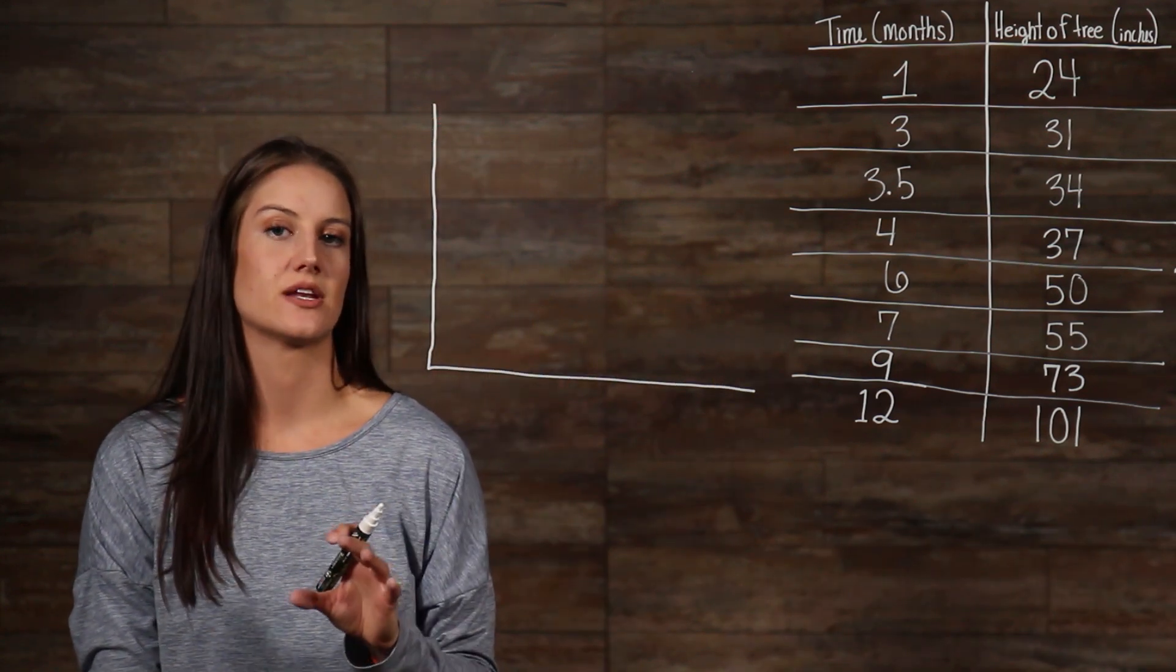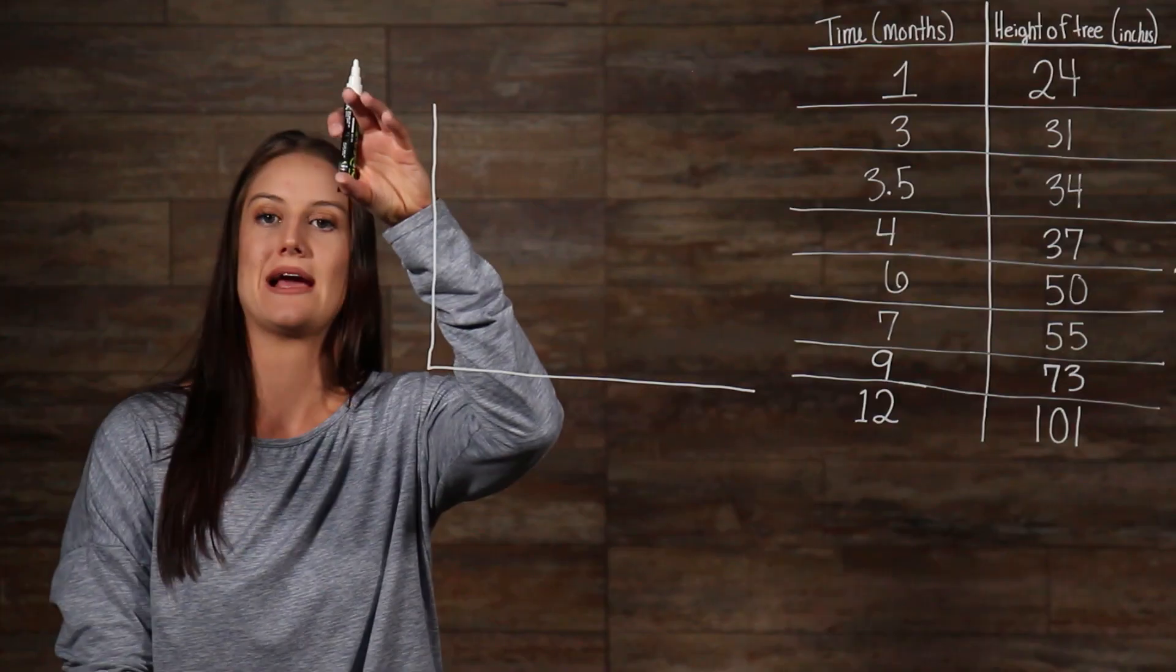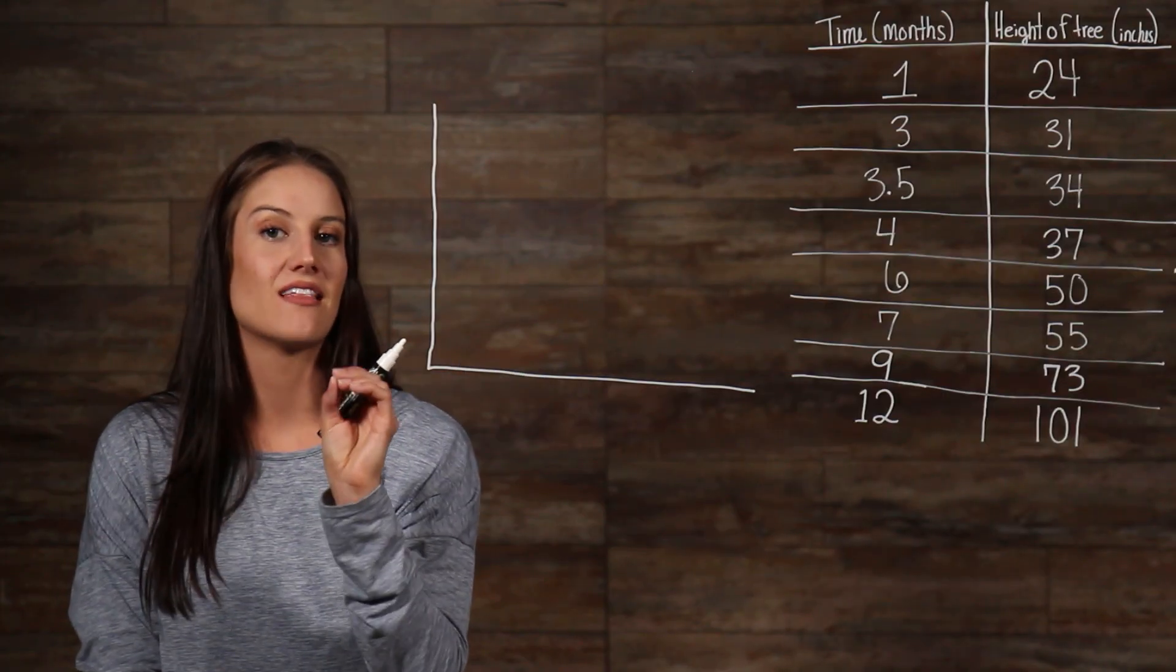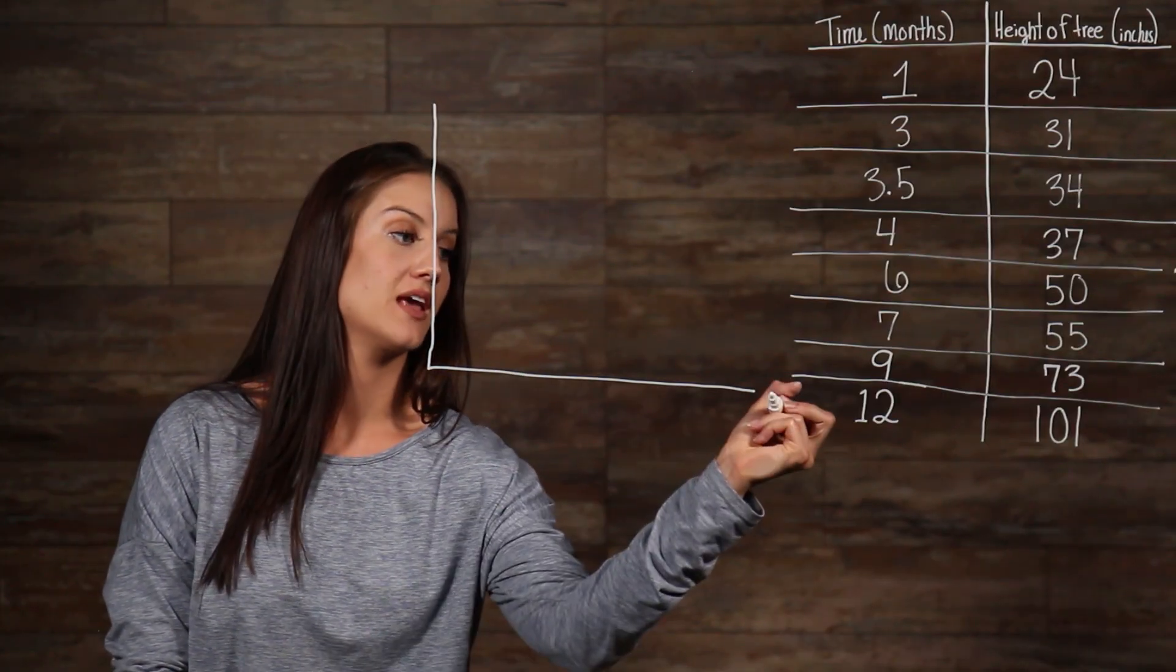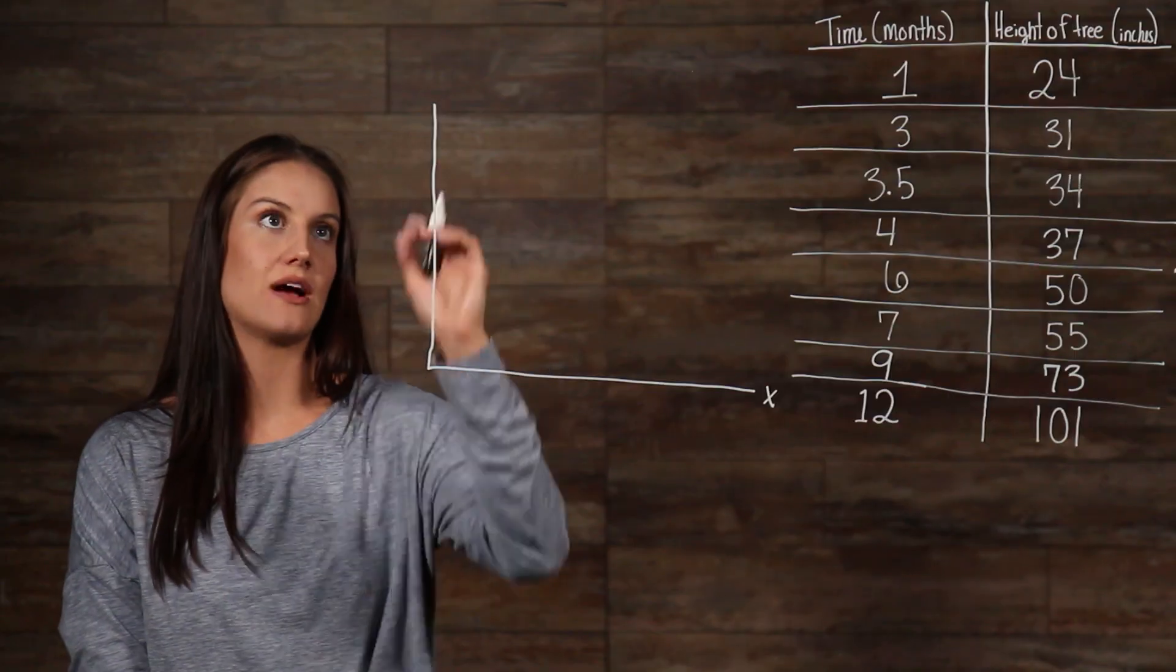The two separate lines represent your x-axis and your y-axis. The x-axis is the line that runs horizontally, and your y-axis is the line that runs vertically. Always label your axes.